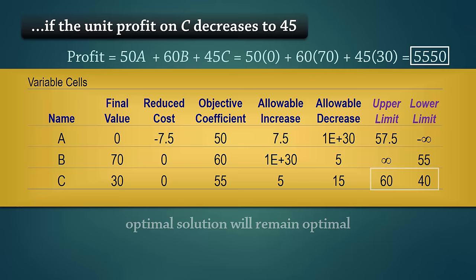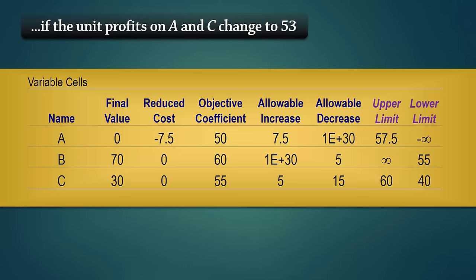Next, what will happen if the unit profit on both A and C are changed to 53? Note that this sensitivity report only accounts for one change at a time. So if there are simultaneous changes, as we have here, we have to check if the sum of the ratio of proposed changes to allowable changes is within 100%. If the sum of this ratio is over 100%, the optimal solution may no longer be valid. This is called the 100% rule.